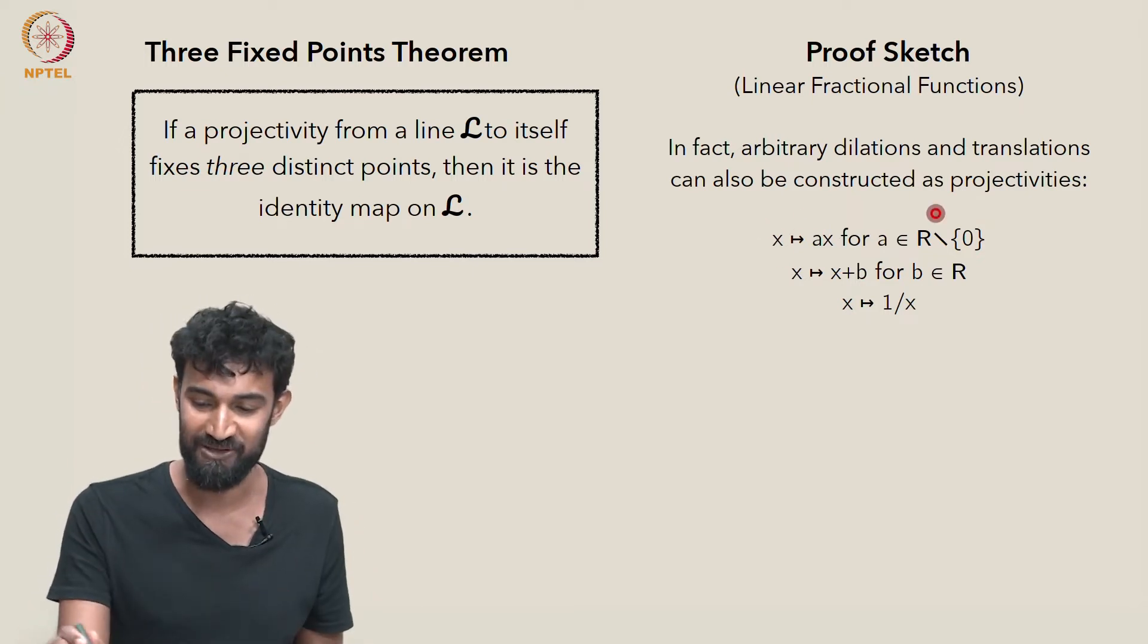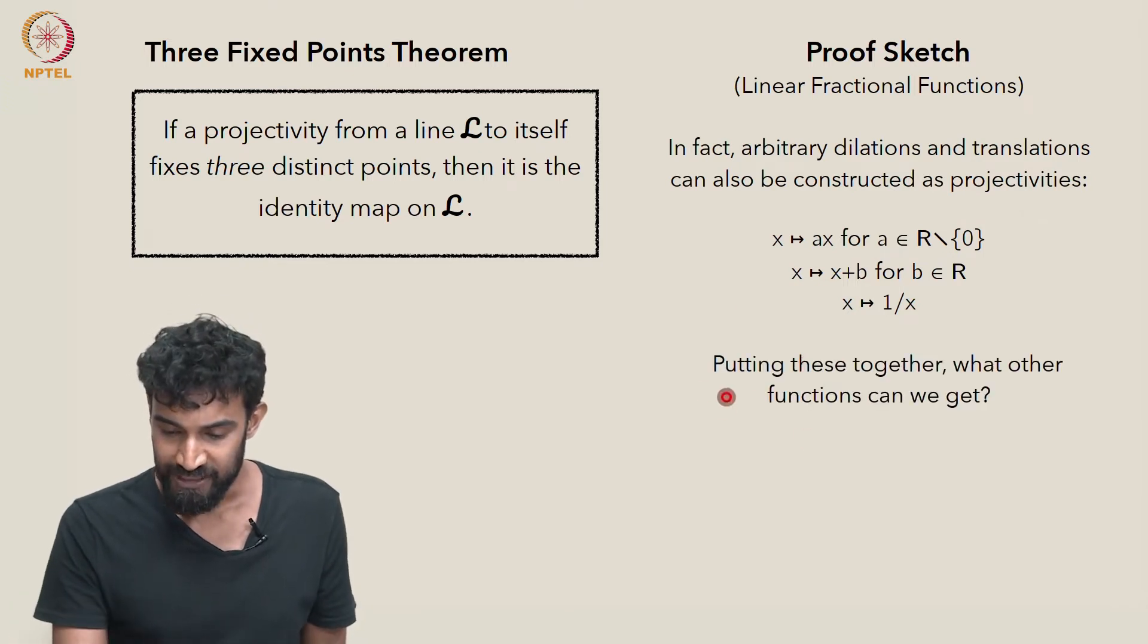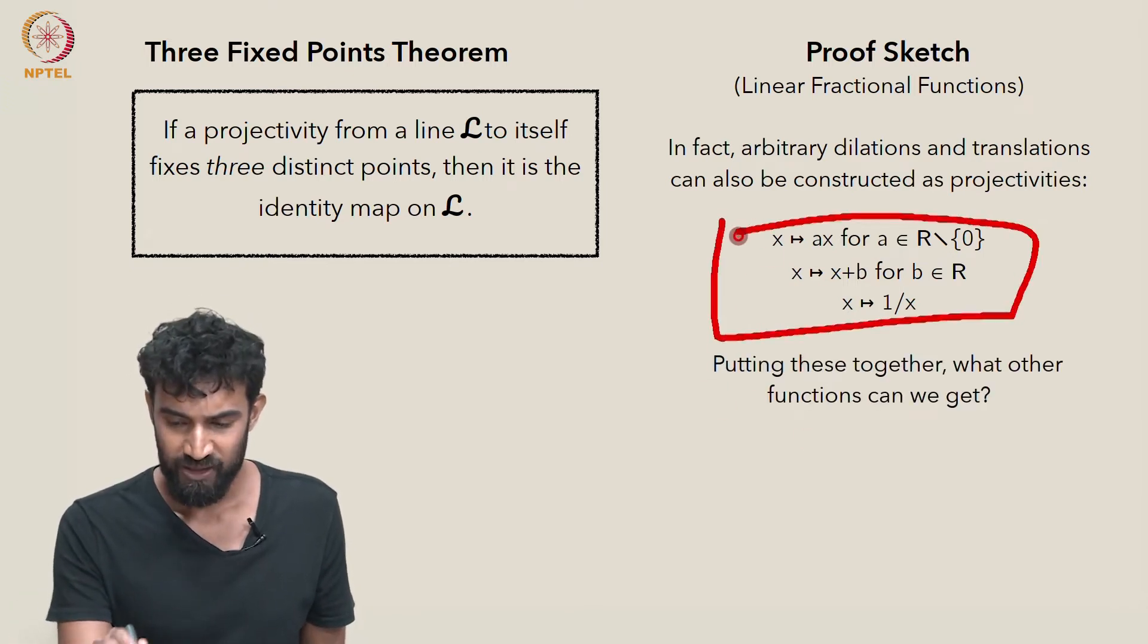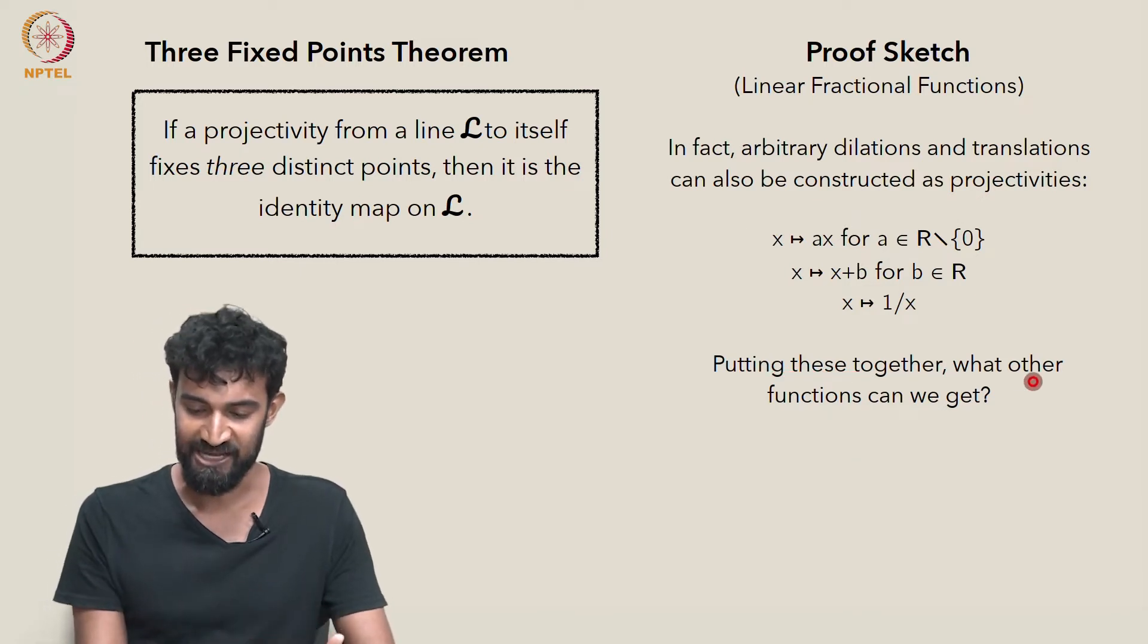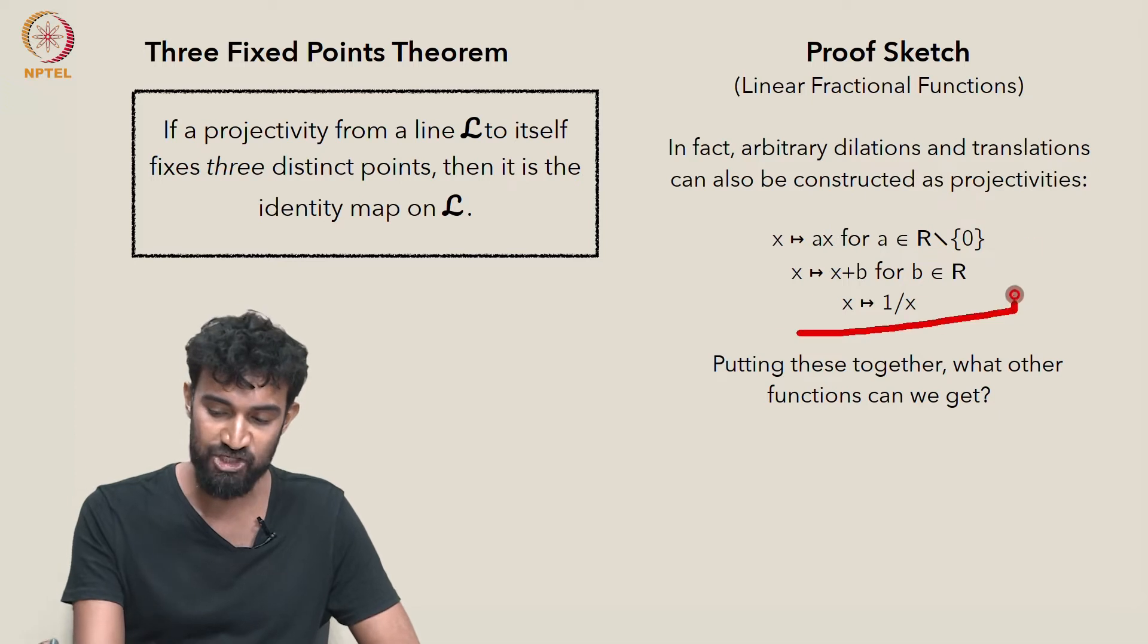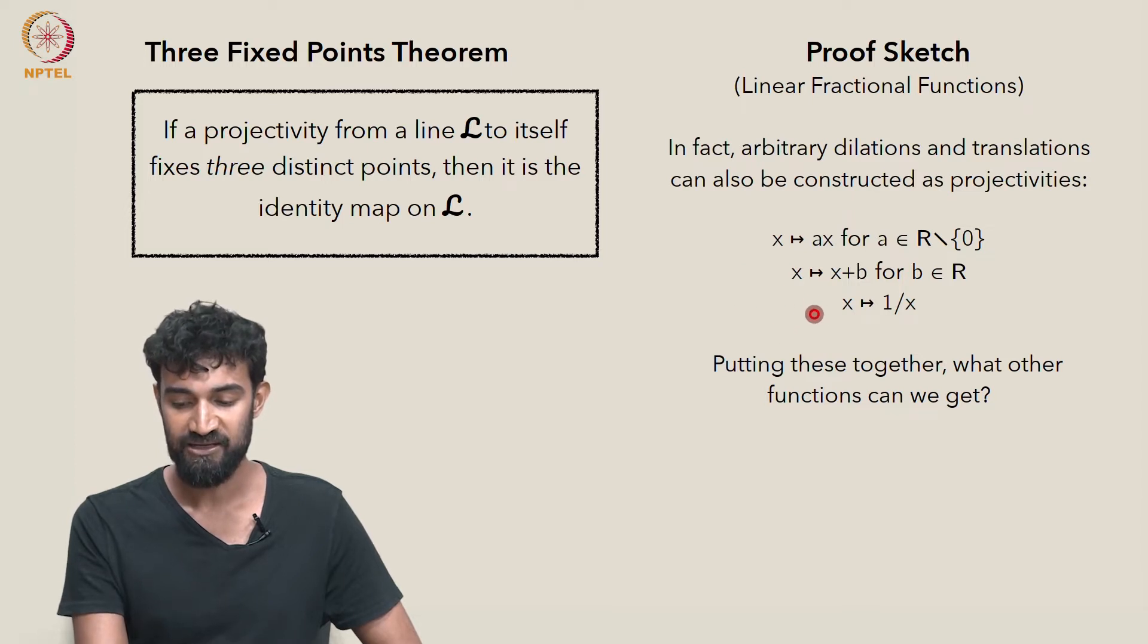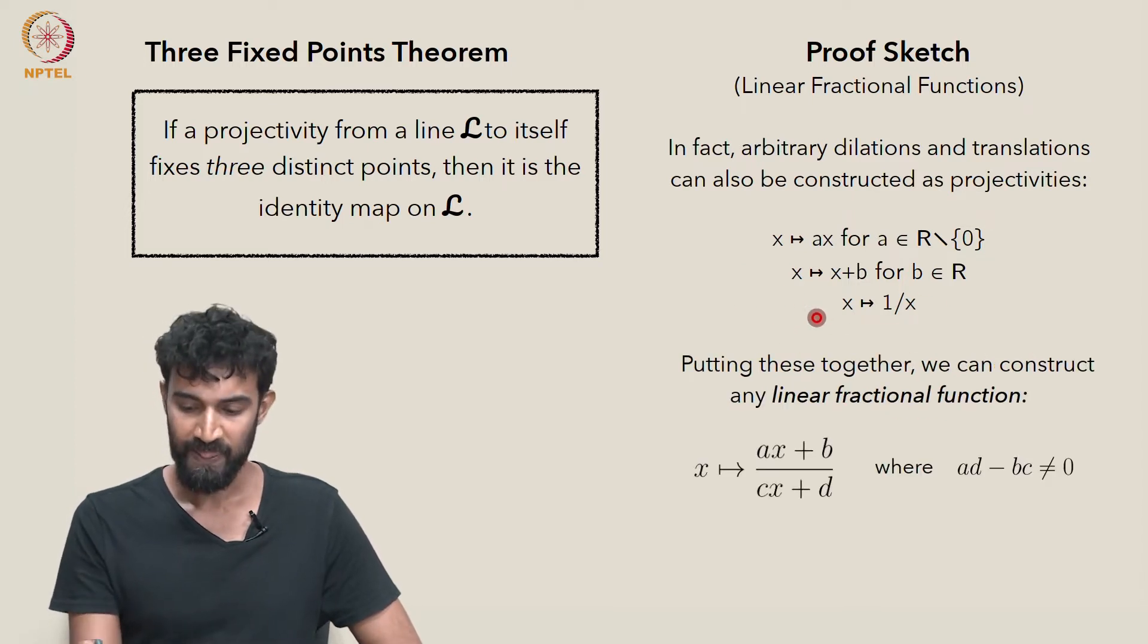This is why it's a sketch of a proof. I'm leaving several holes for you to work out. But if we accept that, what do we get when we put these together? What other functions can we get as compositions of these three types of functions: dilations, translations, and inversion? Putting these together, we can construct any linear fractional function.